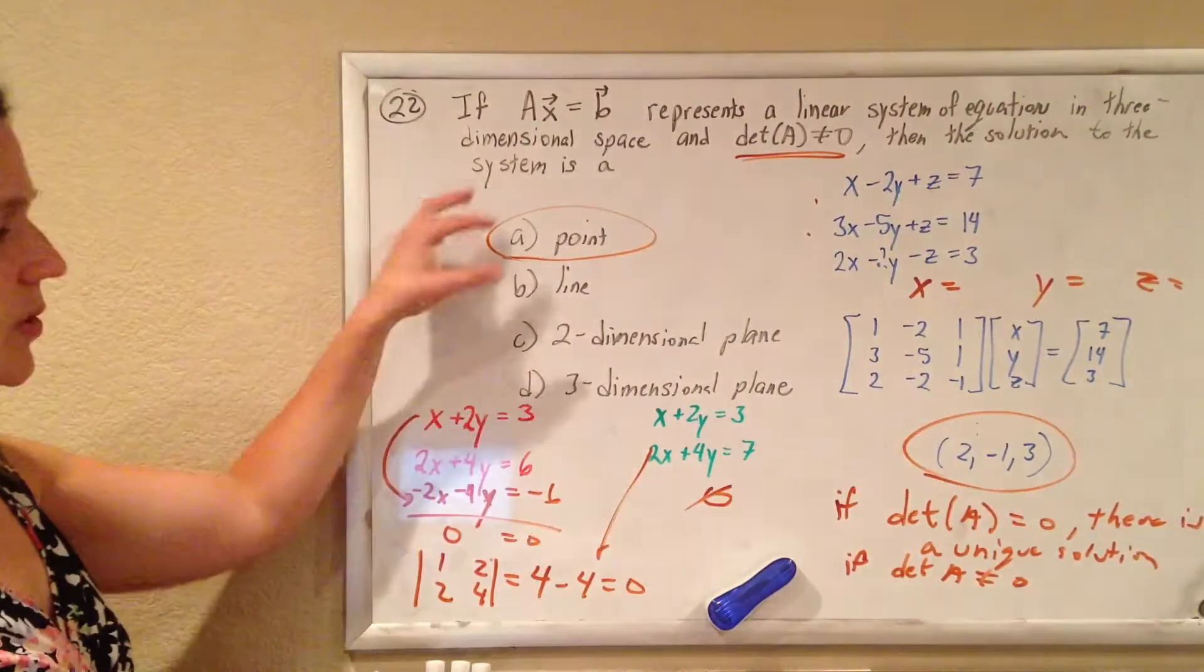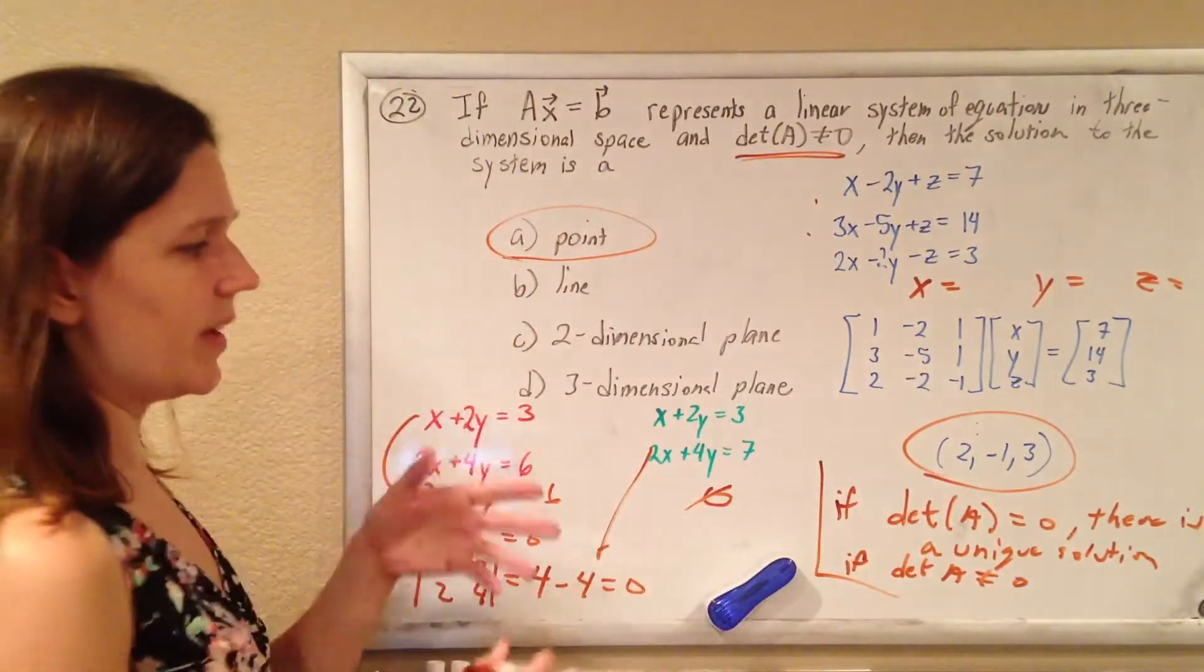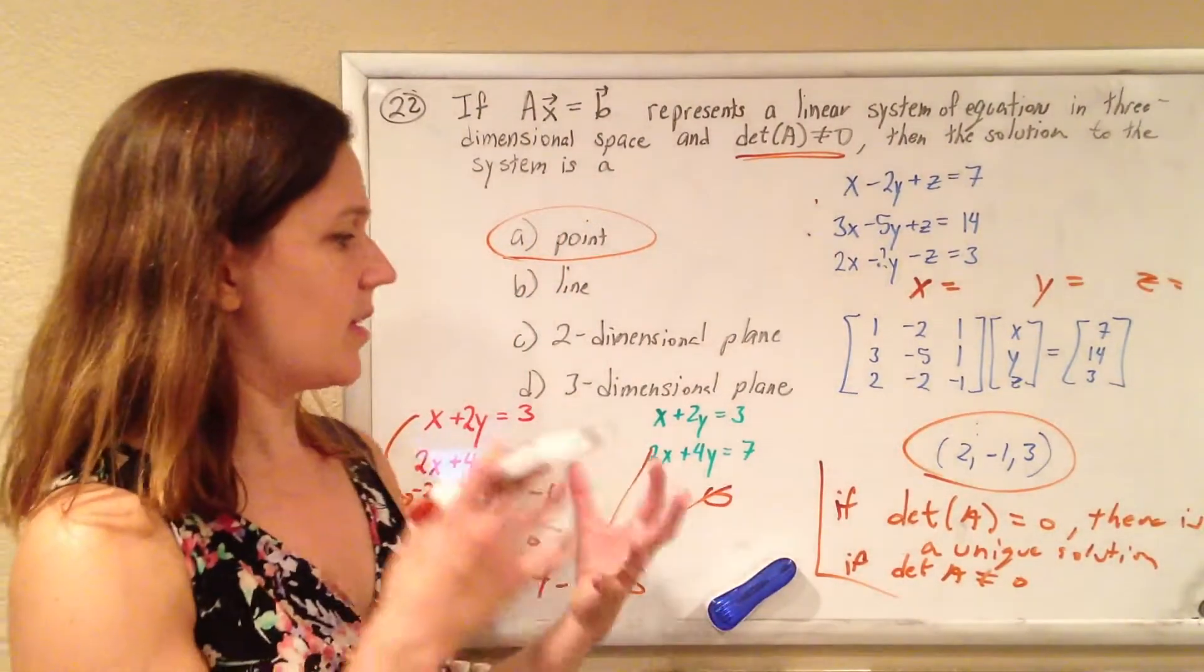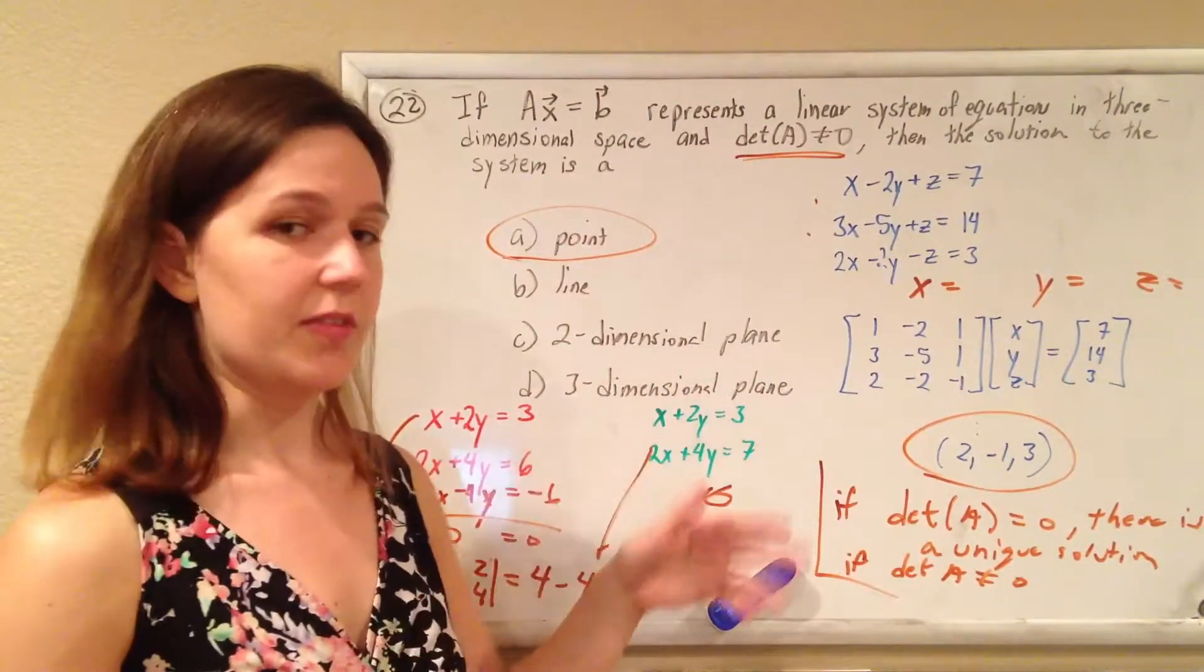But, the answer to this one, and the basic thing that you need to know, is that if the determinant of A doesn't equal zero, there is a nice, unique solution. And that unique solution is at a point. And if it does equal zero,